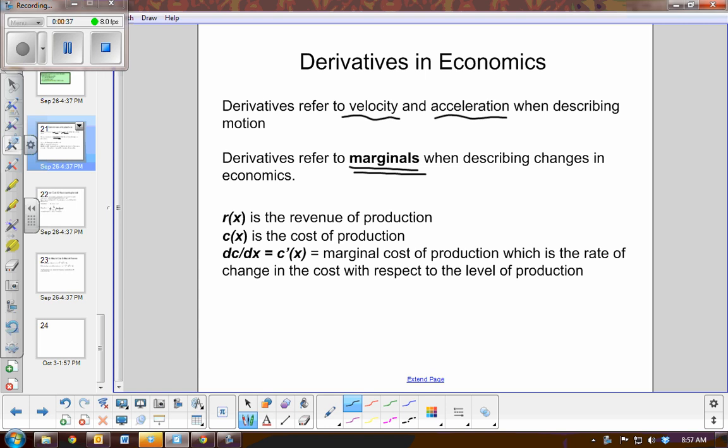We typically use R(x) to represent the revenue of production, how much money are you making, and C(x) is usually the notation for the cost of production. So if we take the first derivative of cost with respect to x, which is the item of production, or we can also refer to that as C'(x), this would be the marginal cost of production.